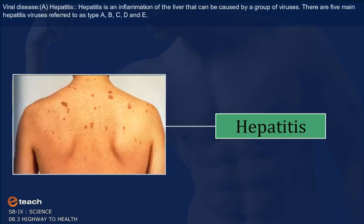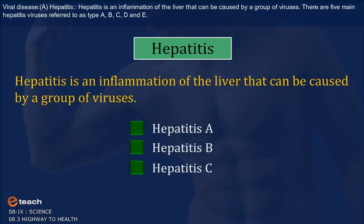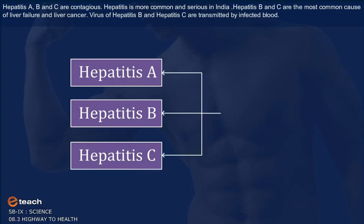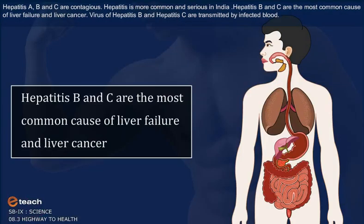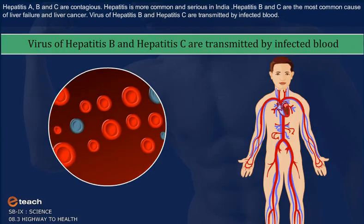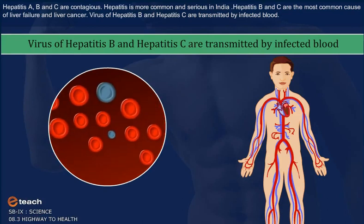Viral Disease: Hepatitis. Hepatitis is an inflammation of the liver that can be caused by a group of viruses. There are 5 main hepatitis viruses referred to as type A, B, C, D and E. Hepatitis A, B and C are contagious. Hepatitis is more common and serious in India. Hepatitis B and C are the most common cause of liver failure and liver cancer. The viruses of hepatitis B and C are transmitted by infected blood.